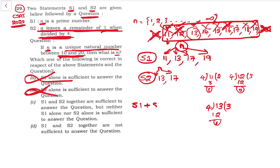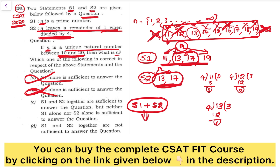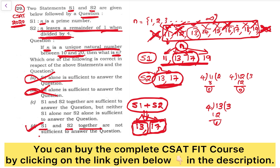Now let's combine Statement 1 and Statement 2. From Statement 1 we get 4 values and from Statement 2 we get 2 values, and 2 of those are common — so by using both statements we still get 2 values for n: n can be 13 or n can be 17. We still cannot determine the unique value of n. So the answer is option D — S1 and S2 together are not sufficient to answer the question.